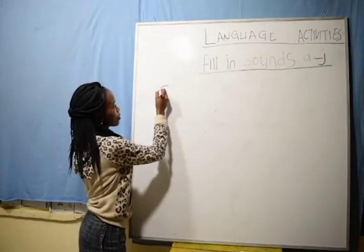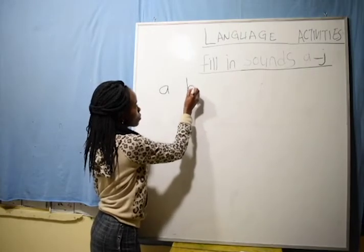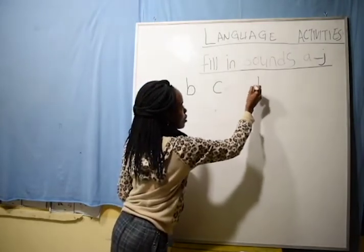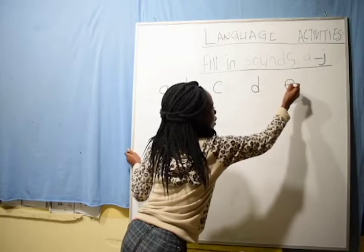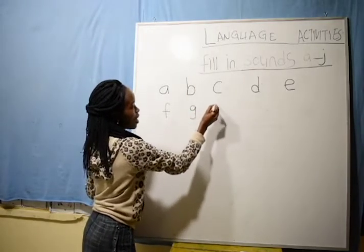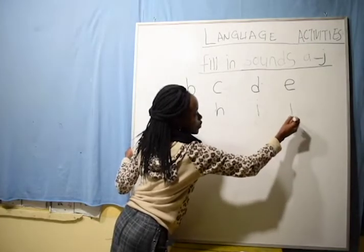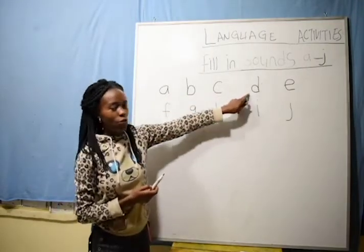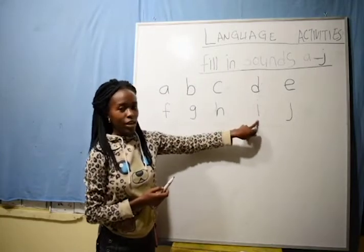This is sound A for apple. Then we go to B for ball, K for cat, D for dog, E for egg, F for fish, G for girl, H for heart, I for ink, and J for jet. A for apple, B for ball, K for cat, D for dog, E for egg, F for fish, G for gun, H for hat, I for ink, and J for jet.